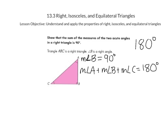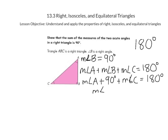We can substitute 90 degrees for the measure of angle B. So now we have the measure of angle A plus 90 degrees plus the measure of angle C is equal to 180 degrees. If we subtract 90 degrees from both sides, then the measure of angle A plus the measure of angle C is equal to 90 degrees, which shows that the sum of the measures of the two acute angles in a right triangle is equal to 90 degrees.